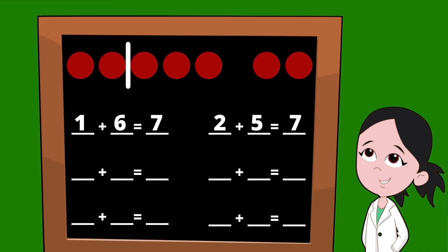Let's slide our line over one more dot to find our next set of partners. On the left side of our line, we have three dots, so our first partner is three. On the right side of our line, we have four dots, so our other partner is the number four. Three plus four equals seven.